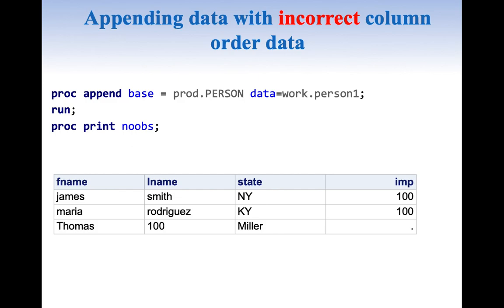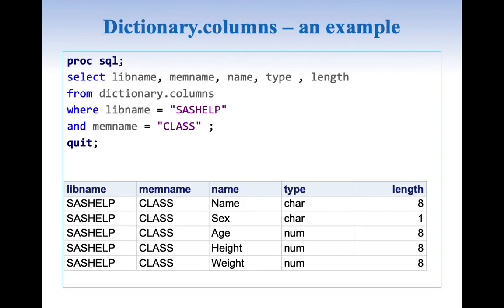From here we can clearly understand that appending wrong data will give us a lot of problems during data analysis and nobody can trust our data. So let us look into how we can fix this problem. One way to fix this is to compare the column order of our production file with the external file. We can do this by understanding a little bit about dictionary.columns first. Dictionary.columns is a table which stores all the information about all columns in all tables.